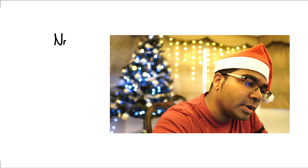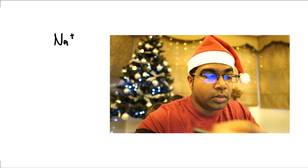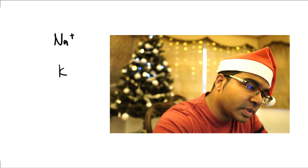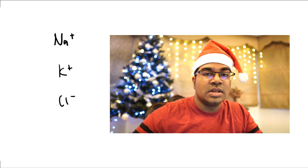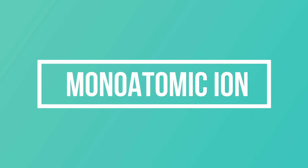For both cations and anions, we can further classify them based on how many atoms form an ion. If we have a single atom forming an ion, such as sodium ion Na+, potassium ion, or chloride ion, these ions are known as monoatomic ions because they are formed from a single atom. Mono means one — monoatomic means from a single atom.